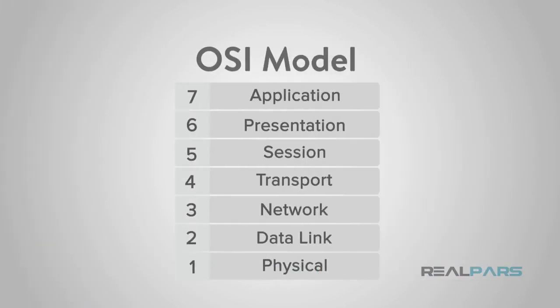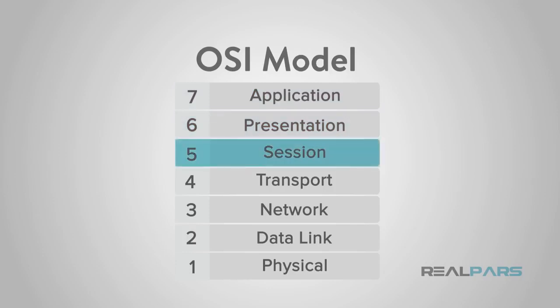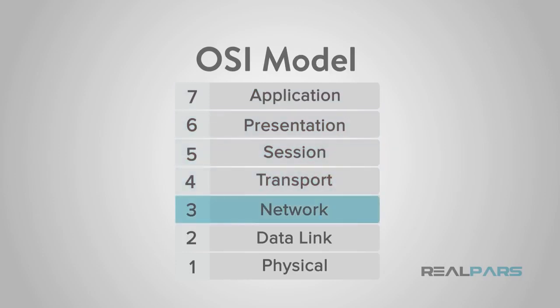The OSI model layers are typically described from the top layer down. The layers are described as application, presentation, session, transport, network, data link, and physical.